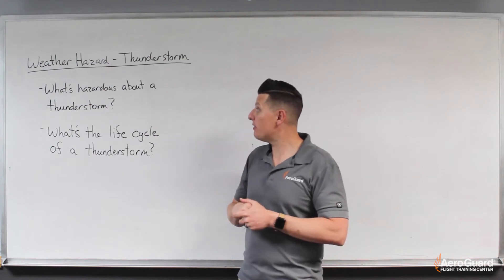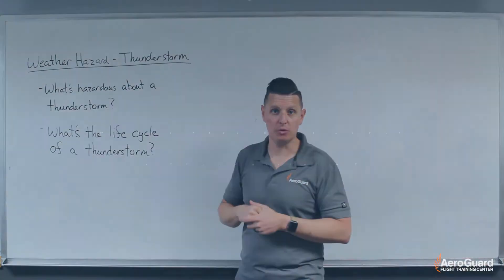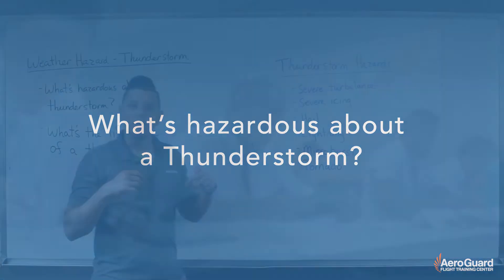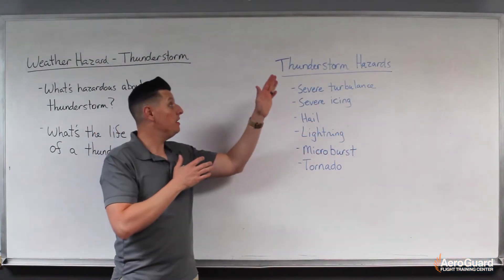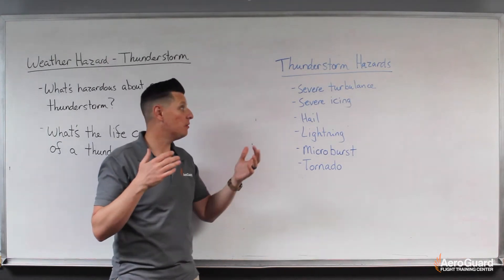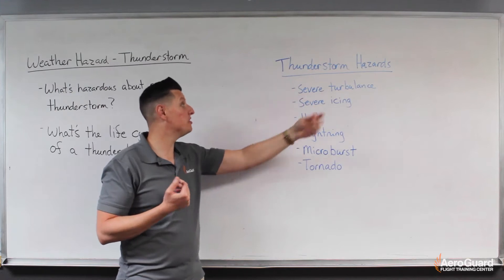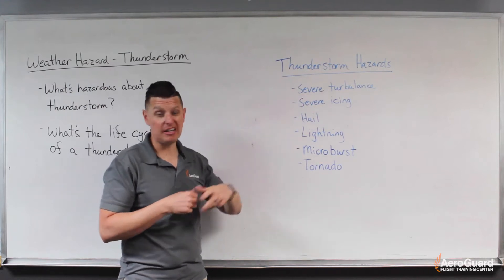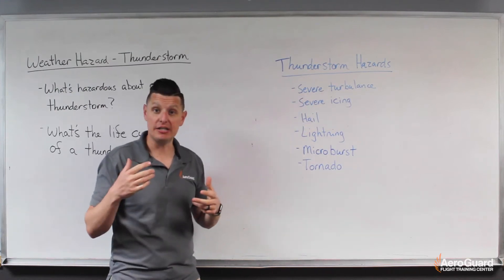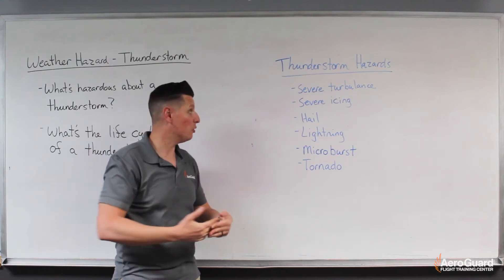So let's start with what is hazardous about a thunderstorm. Some of the hazards associated with a thunderstorm — I think the most common that we would probably describe — are extreme or very severe turbulence and extreme or very severe icing conditions that would affect us if we were trying to fly through a thunderstorm.